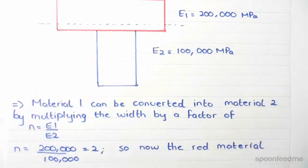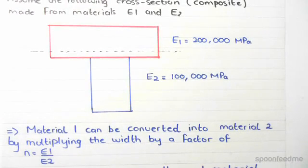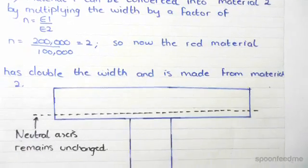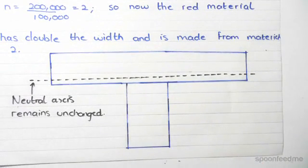Converting the cross-section into material 2, we do E1 divided by E2, which gives us 2. So now the new width of the transformed material, which is the red one, is double what it was. We do 2 times the red width, and the cross-section is now just material 2.